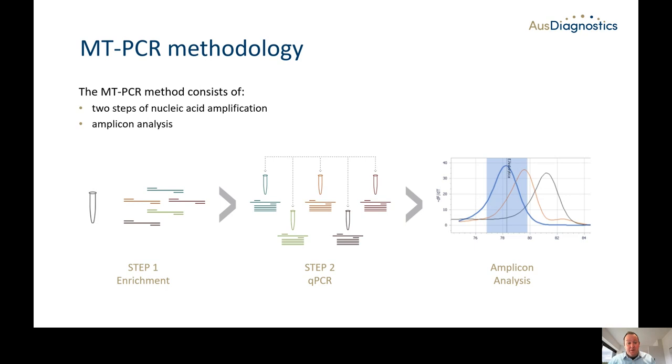For those that aren't familiar with the technique, MT-PCR is a highly multiplexed diagnostic method developed by AusDiagnostics which allows labs to simultaneously test for multiple pathogens from a single starting sample. This slide gives a basic overview of the MT-PCR process. As you can see, it's a two-step process with two separate amplification reactions. Step one is where reverse transcription occurs and what we call sample enrichment. Step two is then another amplification step followed by detection. So let's have a look at each one of these steps in a little bit more detail.